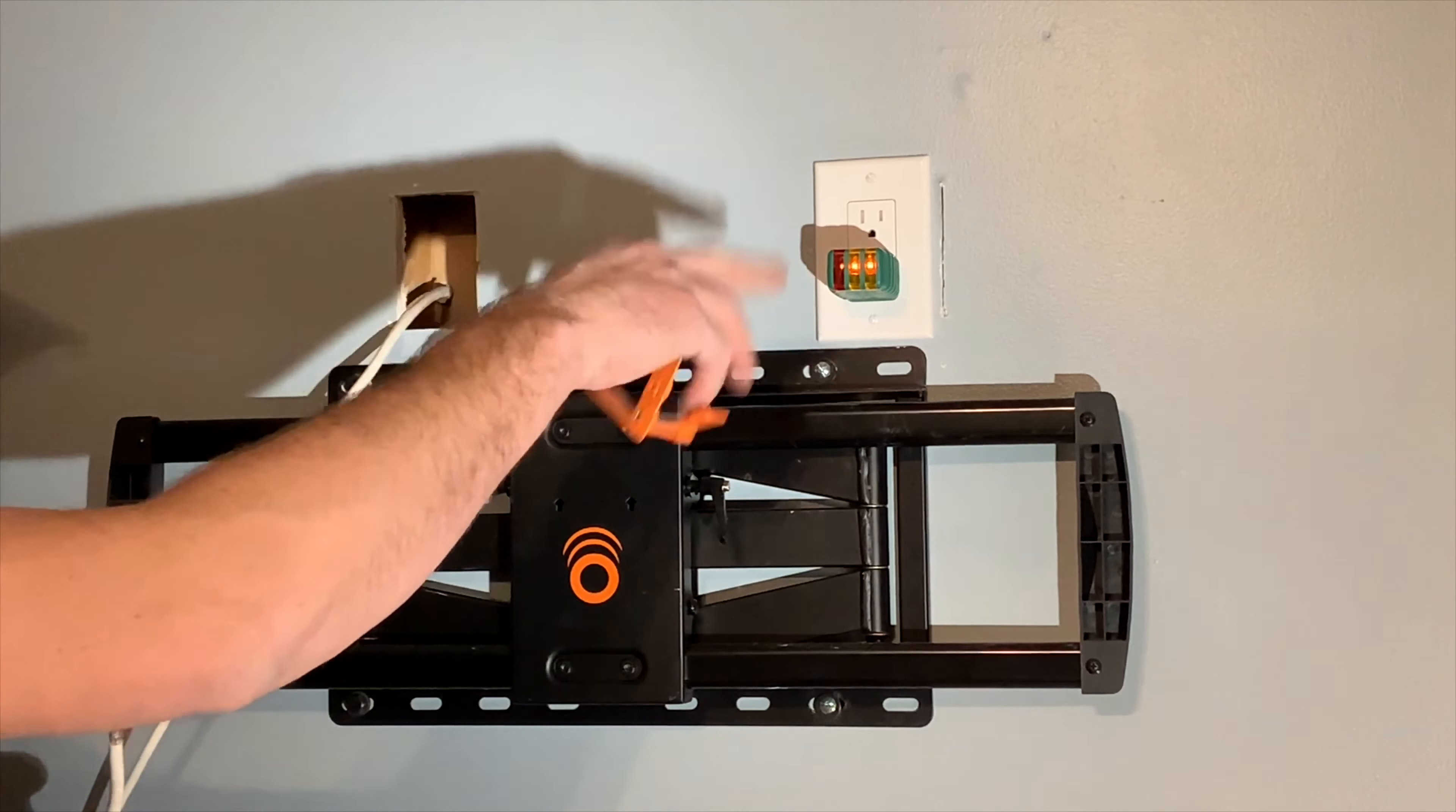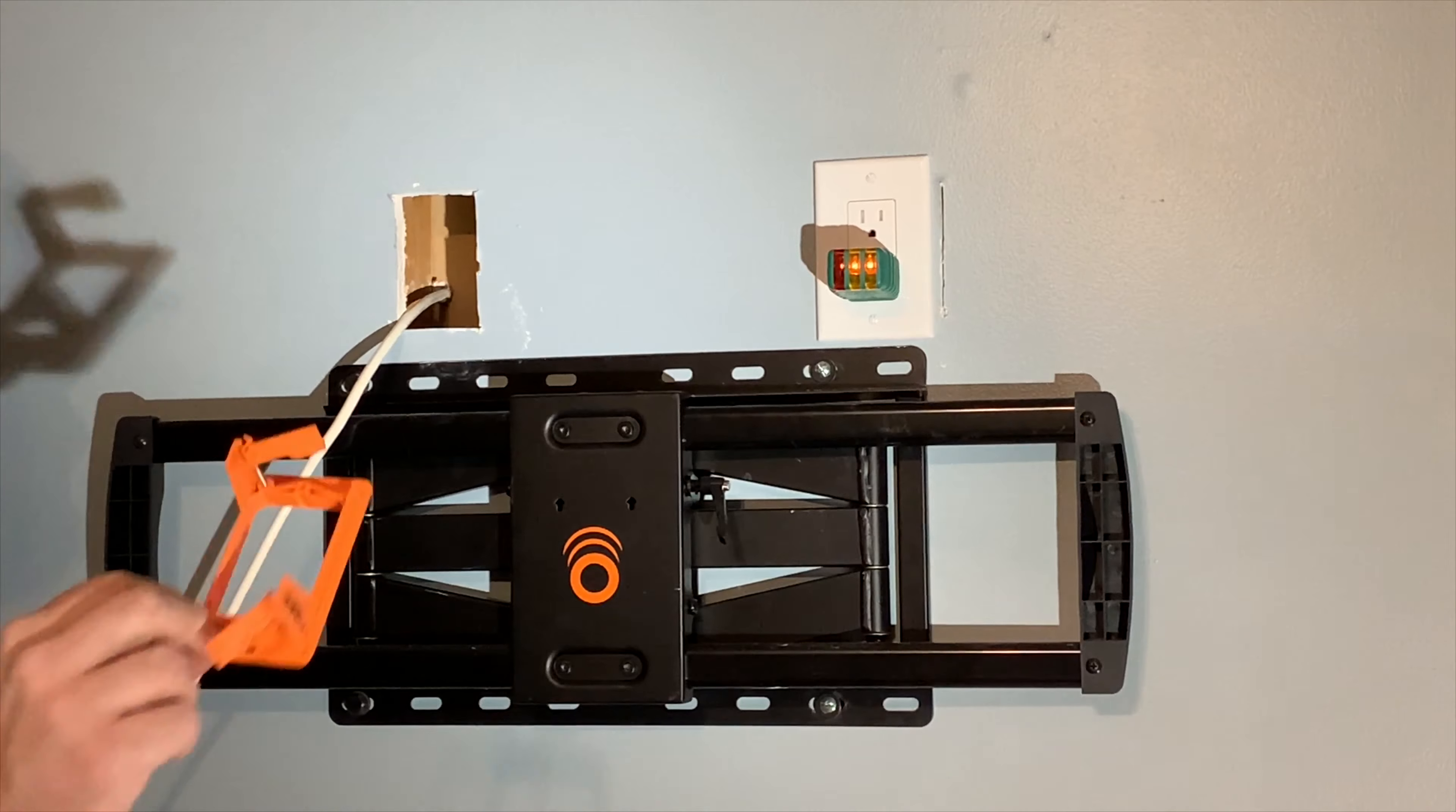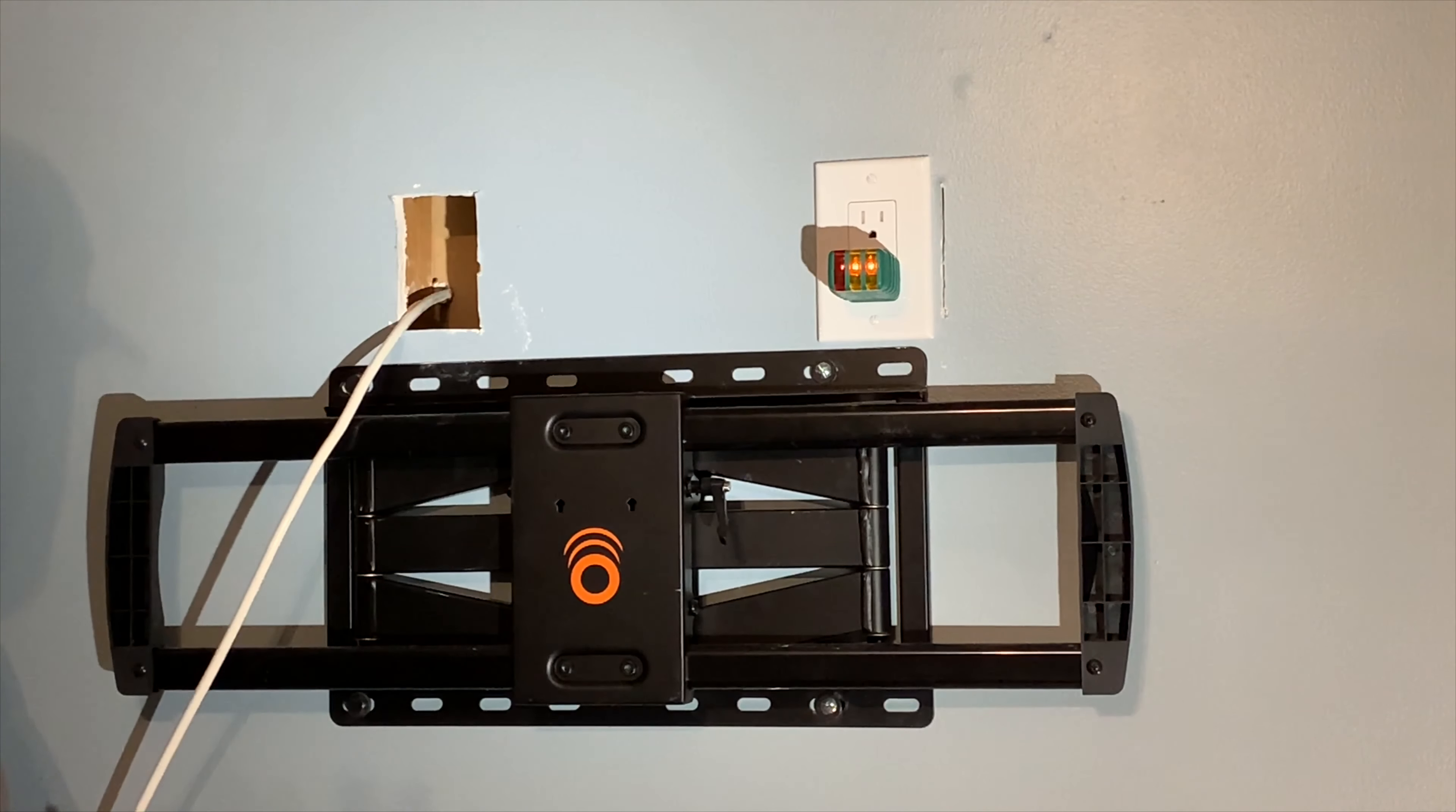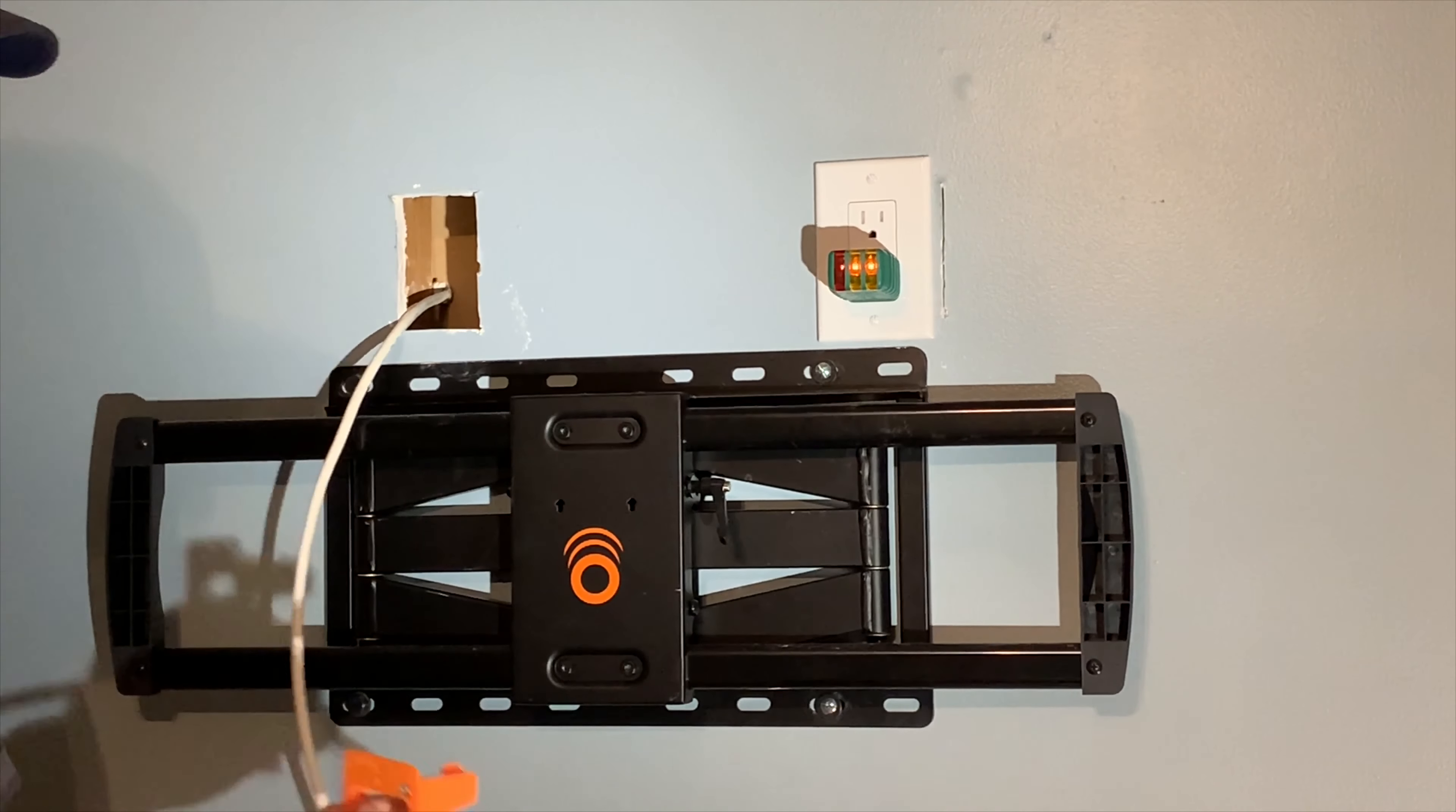For the outlet we used that blue box, which is called an old workbox. Now for the cable, you don't need something that extensive. You can just get away with this. It's the same concept, same flaps, but it just doesn't have a back to it.